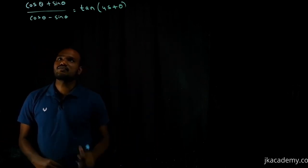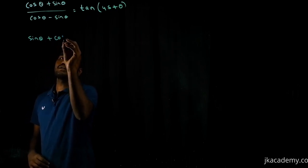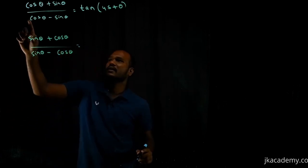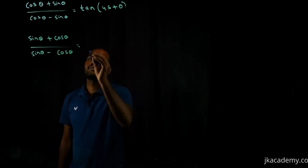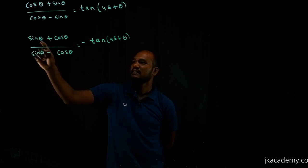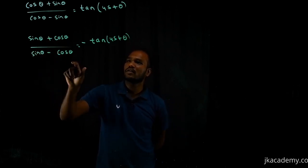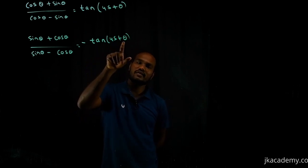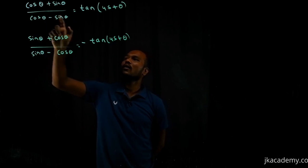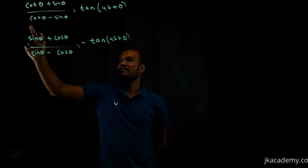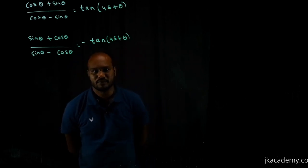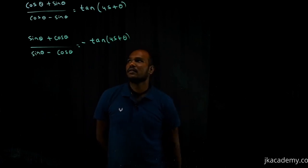There's a small variation: sine theta plus cos theta divided by sine theta minus cos theta — just taking minus common — becomes minus tan of 45 degrees plus theta. So sine, cos, sine, cos, plus and minus converts into minus tan 45 plus theta. Simple.